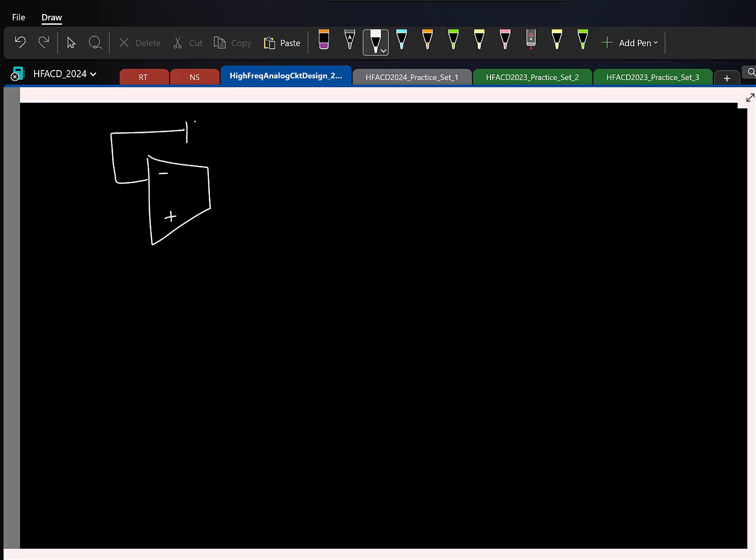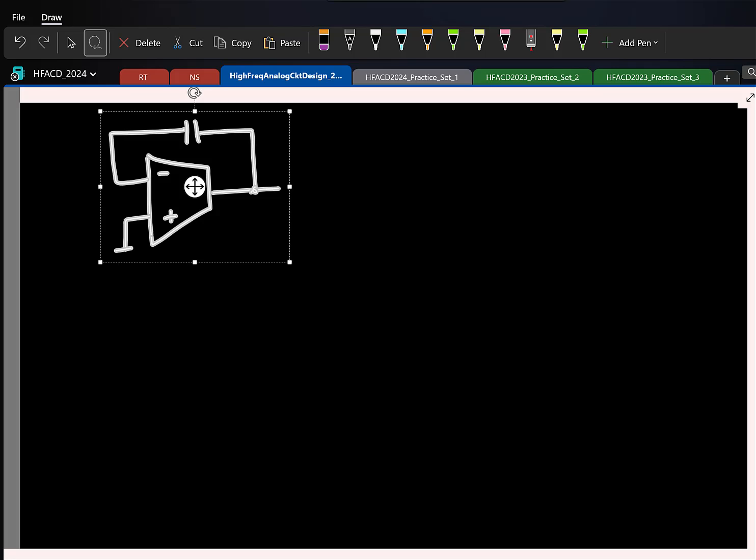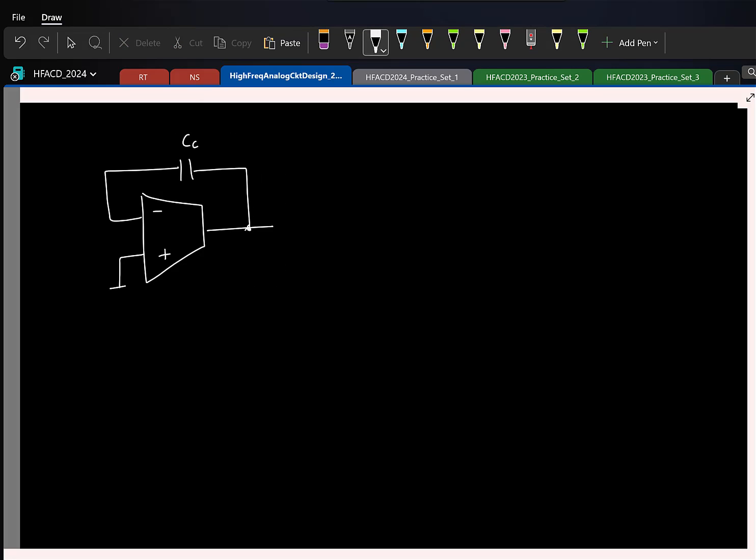So, recollect the RHP0 is coming because we were doing this capacitor and this capacitance is adding another current in addition to the current through the GM. But why did we even add this capacitor in the first place? Yeah, we wanted to exploit the Miller effect and that is why we did that.